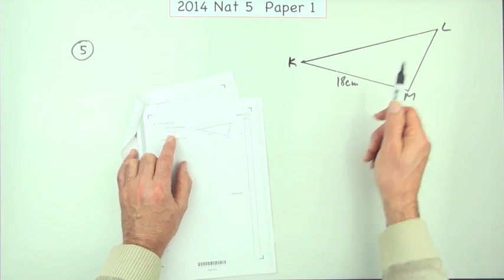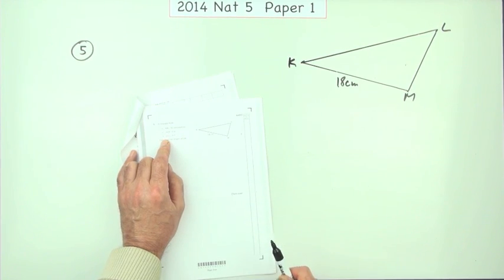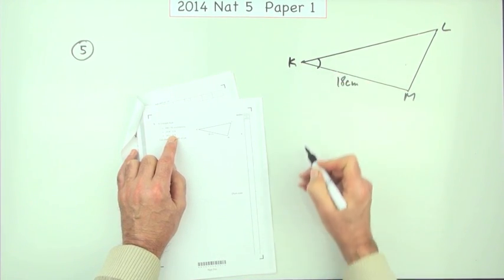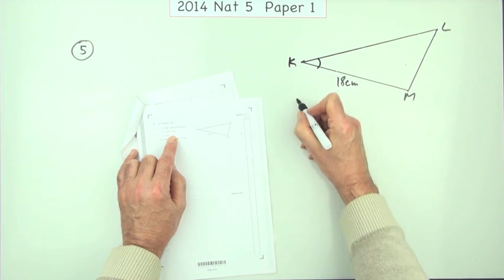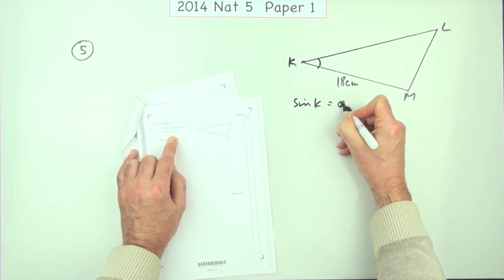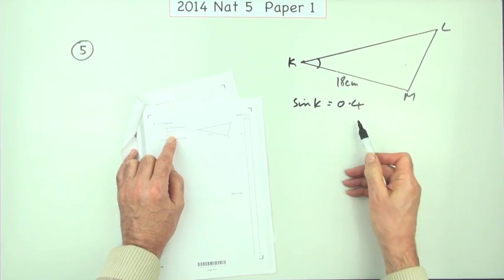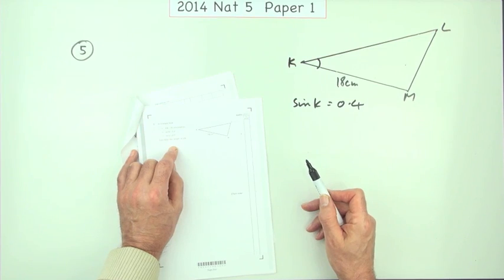But it doesn't tell you the angles, it tells you the signs of the angles. So it mentions this one. It says the sine of that angle is 0.4, but of course without a calculator, you don't actually know what the angle is.